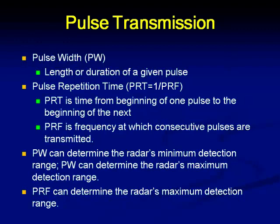Pulse width can determine the radar's minimum and maximum detection range. The PRF can determine the radar's maximum detection range — that means how far the target can be so that it is properly detected. How close the target is and still detected is the minimum range. The radar is not able to detect close-by targets because when the transmitter is sending the pulse, the receiver is not connected at all, and hence the signal reflected from a close-by target will not be received. That can be considered a drawback of this system, but there are several other advantages by which we prefer pulsed systems.